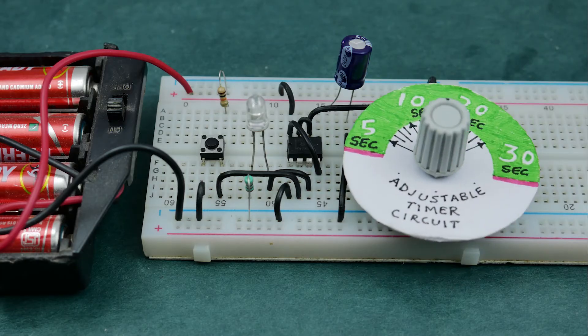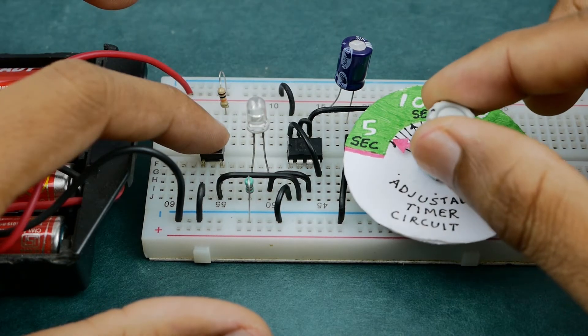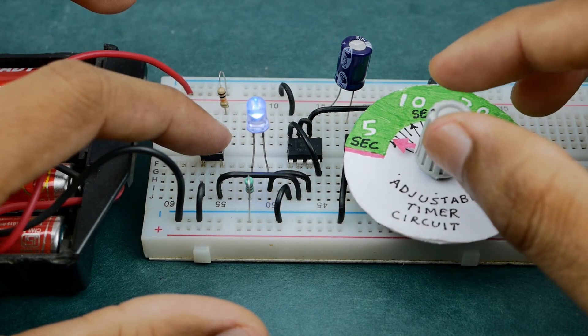Dynamic adjustment of the delay time is also possible by using a potentiometer. So we can adjust the timer duration on the fly.